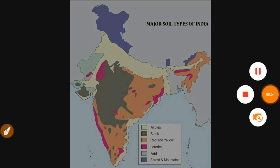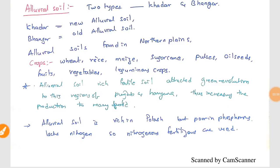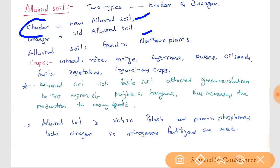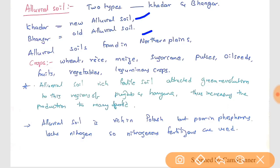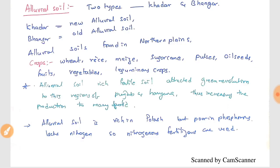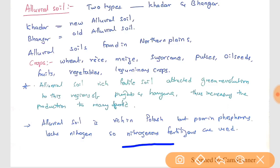Now we will see each soil one by one. First, alluvial soil. Alluvial soils are of two types: Khadar, which is new alluvial soil, and Bangar, which is old alluvial soil. Crops grown in alluvial soil include wheat, rice, maize, sugarcane, pulses, oilseeds, fruits, vegetables, and leguminous crops. Alluvial soils are rich and fertile, responsible for the Green Revolution in Punjab and Haryana. They are rich in potash but poor in nitrogen, so nitrogenous fertilizers are used.